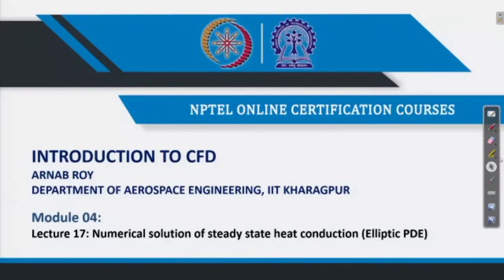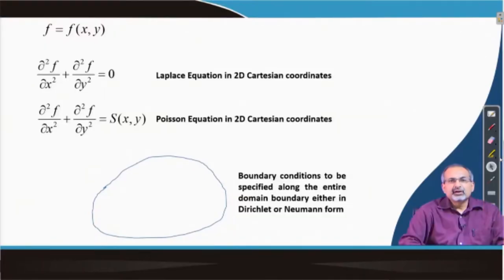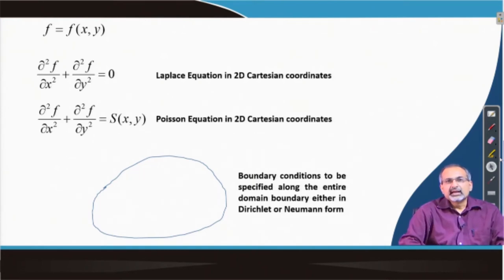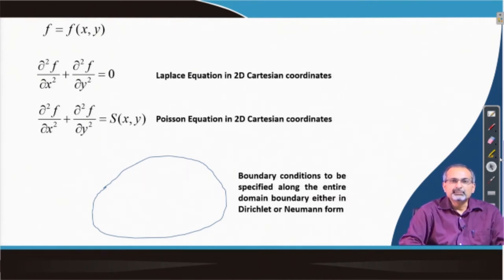Over the next few lectures we are going to talk about numerical solution of steady state heat conduction, or elliptic partial differential equations in general. We have a function f of x and y — the function f is dependent on two independent variables x and y. In that case we could define partial derivatives of the function with respect to both x and y, and there could also be mixed derivatives.